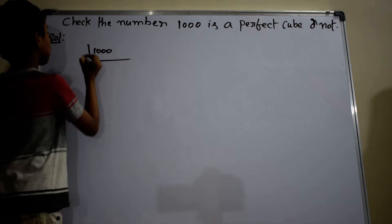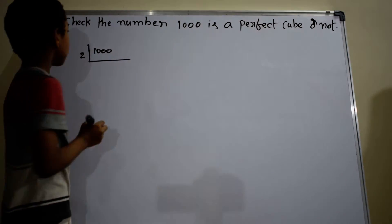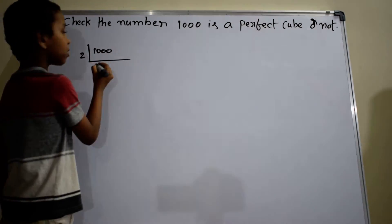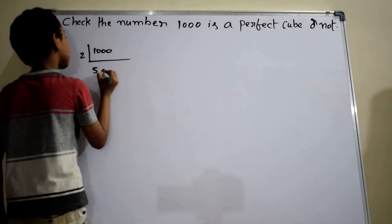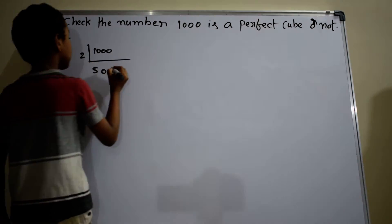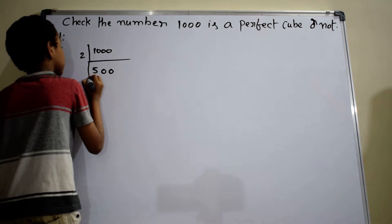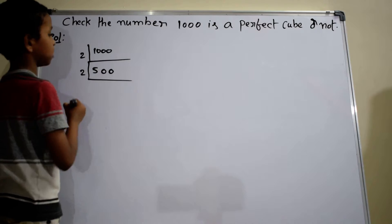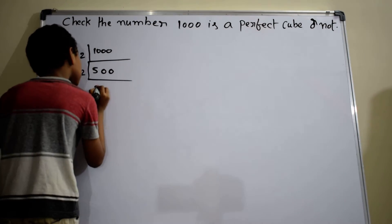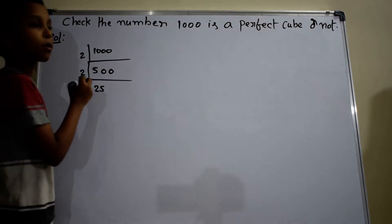Here I am taking 2 as a prime divisor. 10 by 2 equals 5, 0 by 2 equals 0, 0 by 2 equals 0. Again I am taking 2 as a prime divisor. 50 by 2 equals 25, 0 by 2 equals 0.